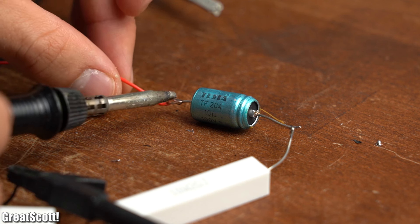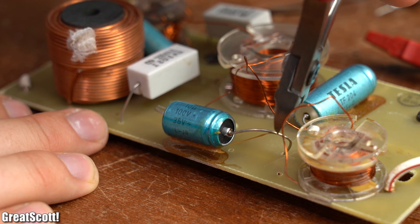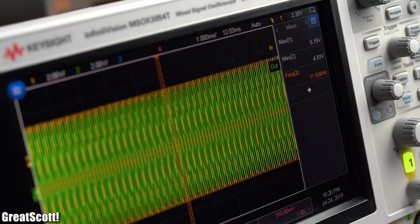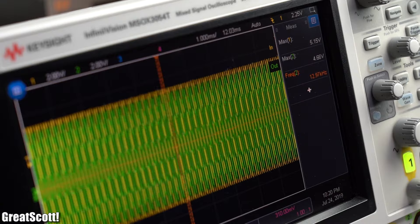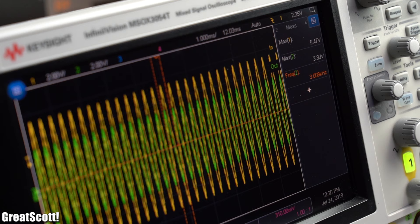Now if we try the same experiment with a 10 microfarad capacitor which I stole from the audio crossover, then we can see that with a higher frequency the maximum of the output voltage stays pretty high, and only with lower frequencies the maximum decreases.